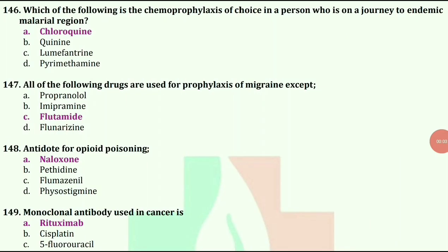Which of the following is the chemoprophylaxis of choice in a person on a journey to an endemic malarial region? Options are chloroquine, quinine, lumefantrine, or pyrimethamine. The answer is chloroquine.